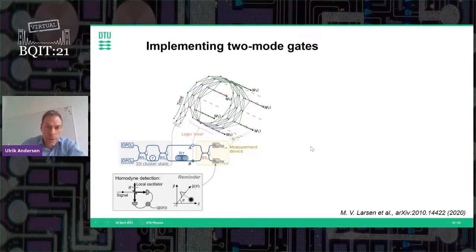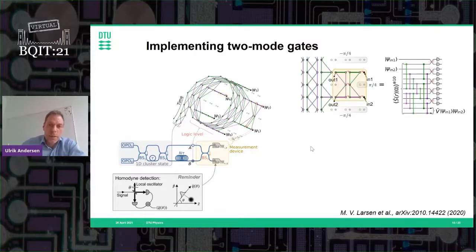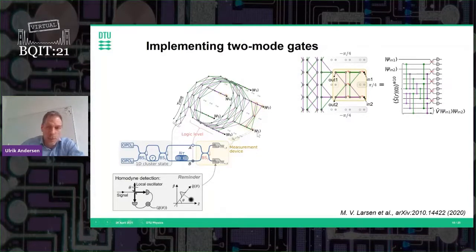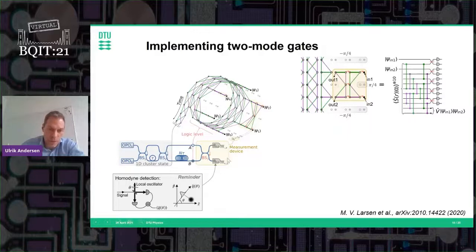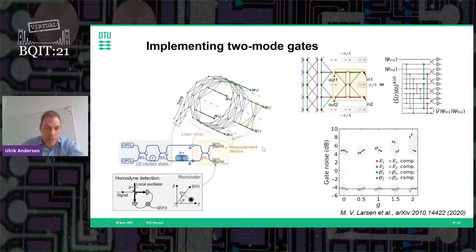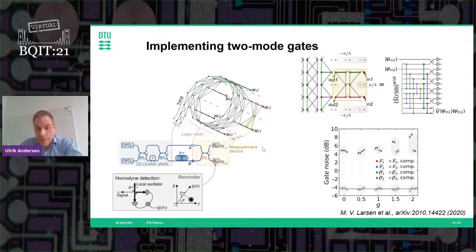For two-mode gates, we now entangle two lines or links to implement a two-mode entangling gate between two input beams. Again, we simply change the measurement setting of the homodyne detector to implement the gate. We estimate the gate noise and measure around 8 dB of noise in the two-mode gate, as expected.